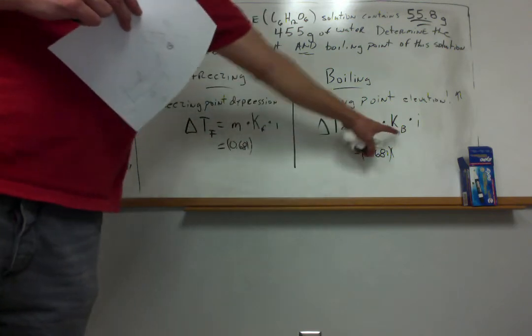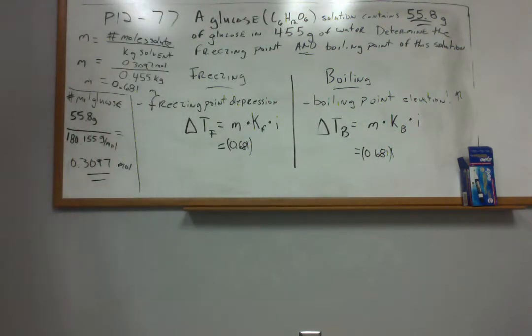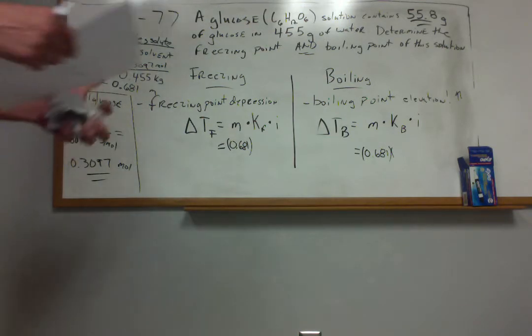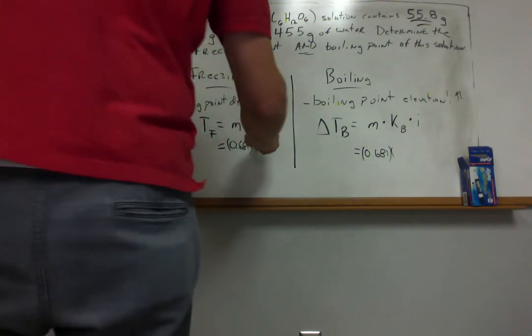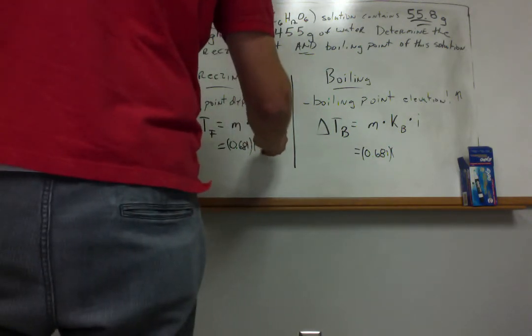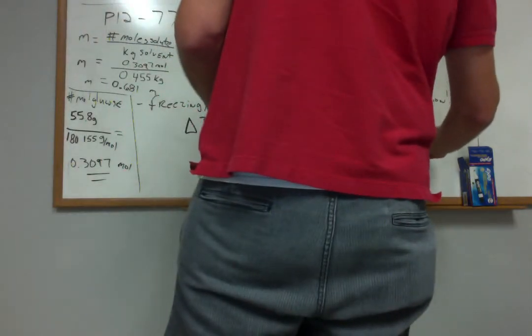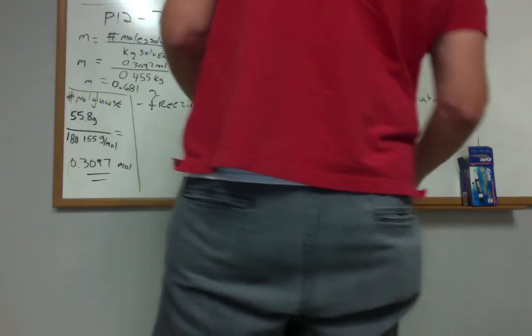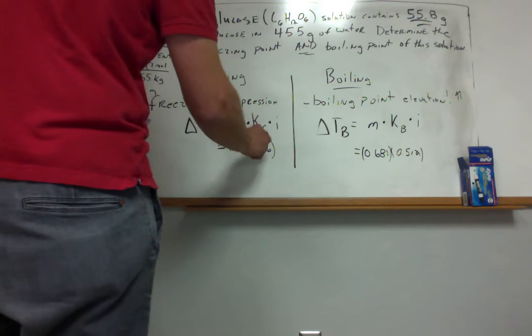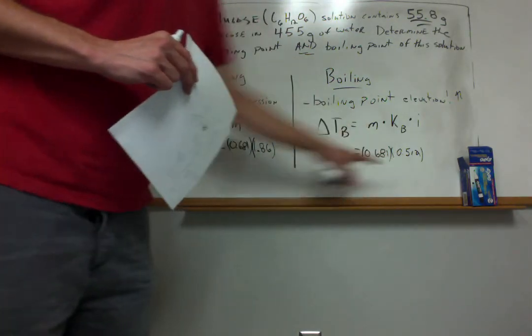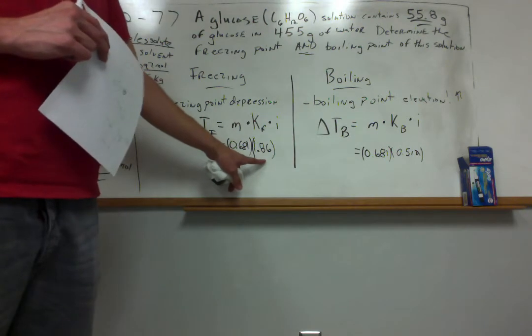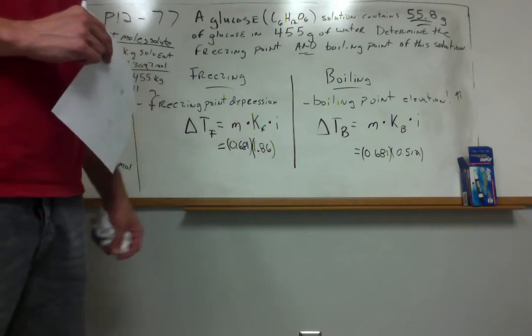Freezing point depression constant, boiling point elevation constant. They're solvent dependent. Every solvent has its own value. You don't have to memorize these numbers. They're usually found in a table. You can find a table in chapter 12 of your book that will tell you the values for KF and KB for water as a solvent. It just so happens that the value for water for KF is 1.86 and the value for KB is 0.512. Both of these numbers that I'm writing in here, I'm not paying too much attention to the units, but both KF and KB have similar units. It's basically degrees Celsius per molal so that the units work out in the end.